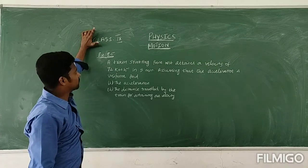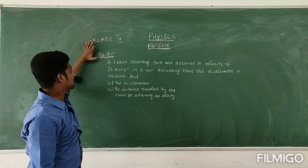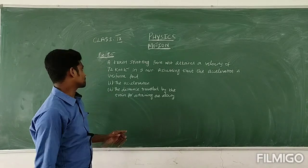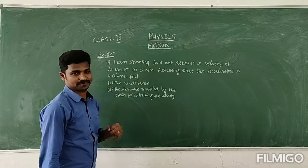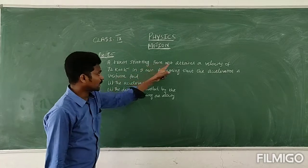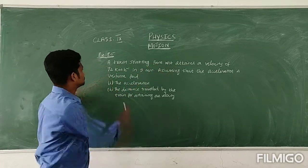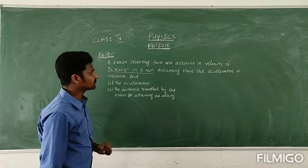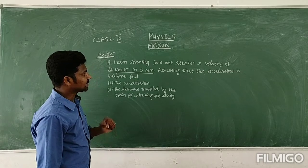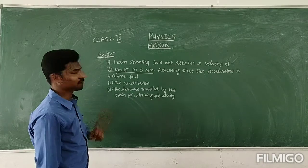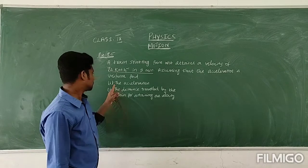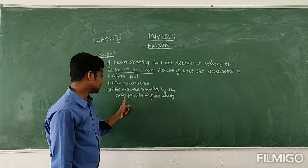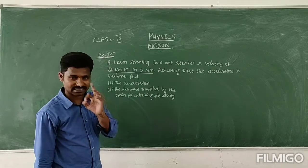Dear students, the next question from 9th standard motion chapter, example question 8.5 — that is an example problem. A train starting from rest attains a velocity of 72 km per hour in 5 minutes. Assuming that the acceleration is uniform, they are asking: what is the acceleration and the distance travelled by the train for attaining this velocity?